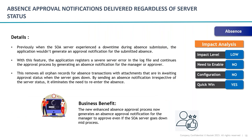Another absence feature: irrespective of server status, if absence approval is initiated, the notification will be delivered to the approver. Earlier, if the server was down when an absence was initiated, the approval notification would get stuck and users would be asked to re-enter the absence. Now, regardless of server status, the approval notification will automatically reach the correct approver — eliminating the need to re-enter absences due to server issues.